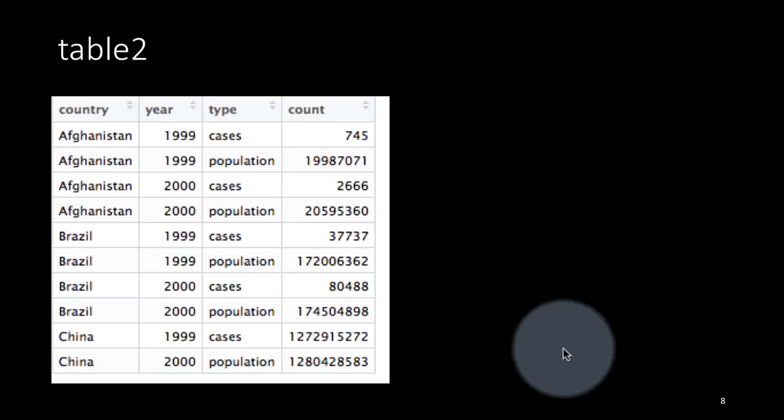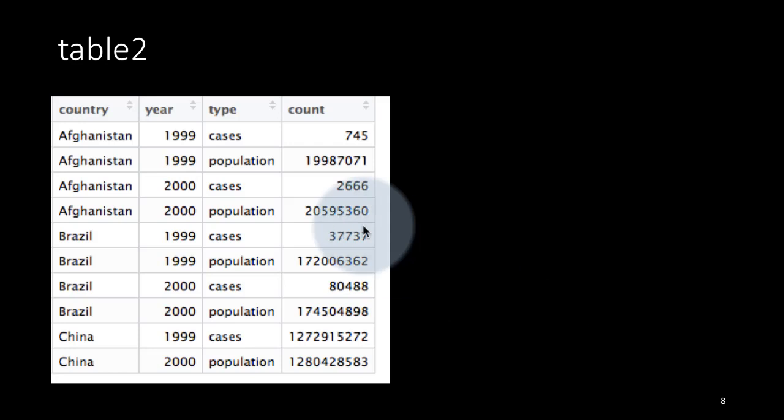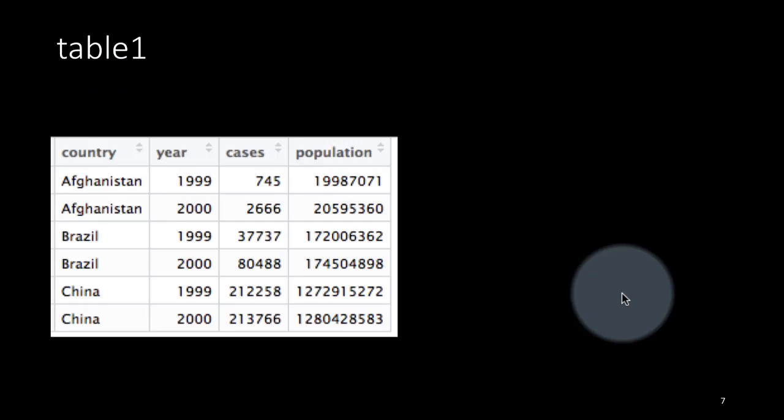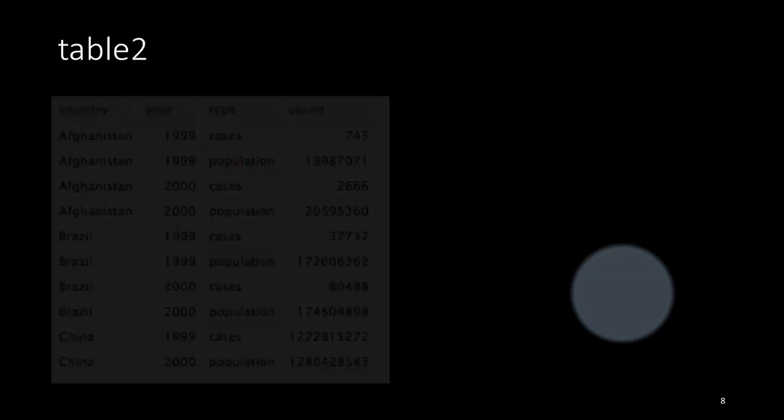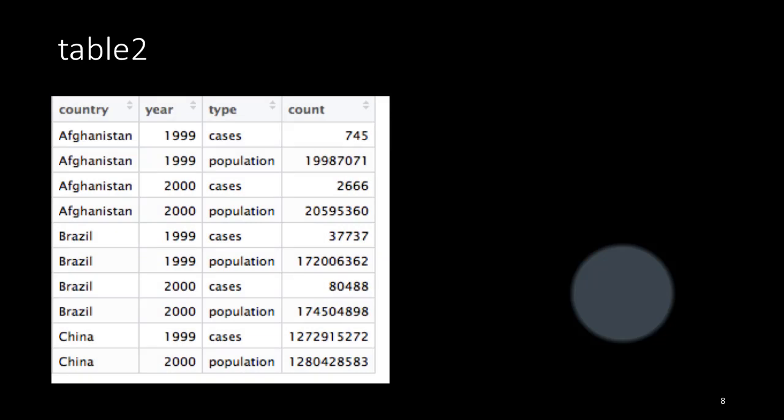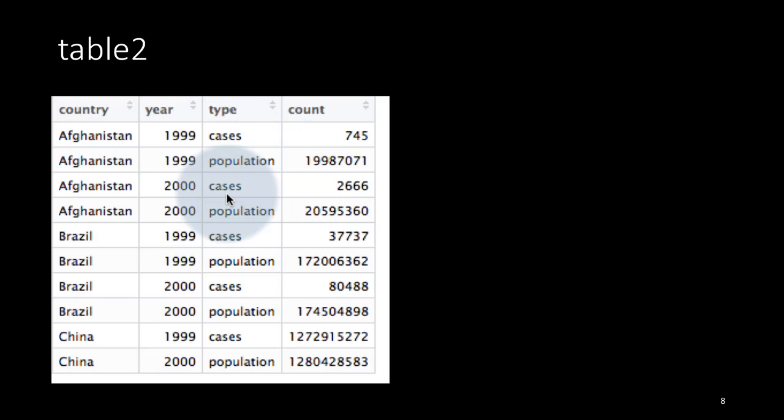So what we're really going to be talking about is how do you take data that is in this format and convert it into the earlier format, or how do you take data which is in this format and convert it into this format? Because for certain analysis, we might find this to be useful. For certain other analysis, we might find that other to be useful. So we need to have an easy way to move data between these two forms.